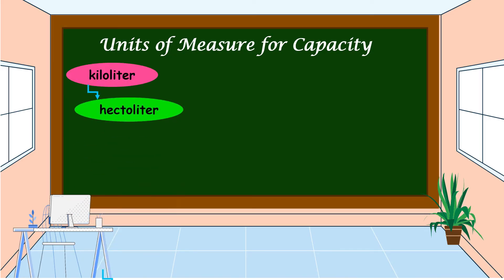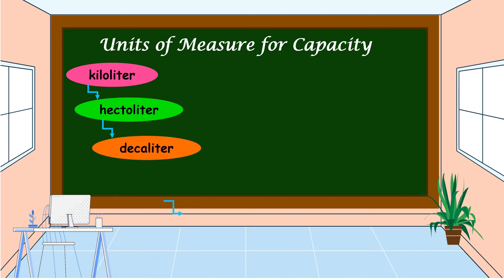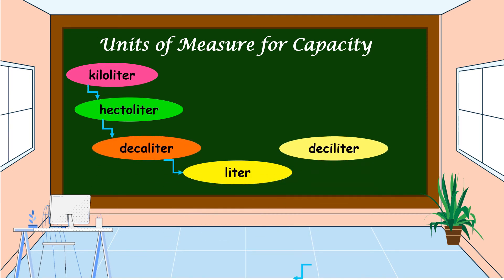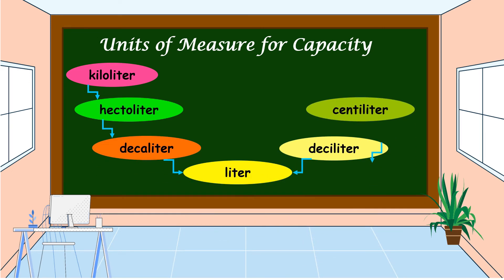The units of measure for capacity are: kiloliter, hectoliter, decaliter, liter, deciliter, centiliter, and milliliter.